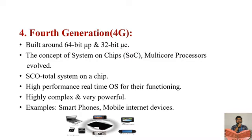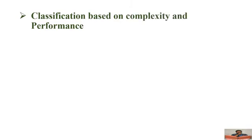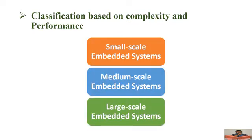The second criteria of classification in embedded systems is based on complexity and performance. Based on complexity and performance, embedded systems are divided into three types: small scale embedded systems, medium scale embedded systems, and large scale embedded systems.